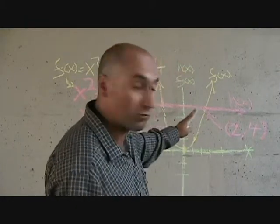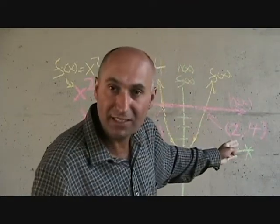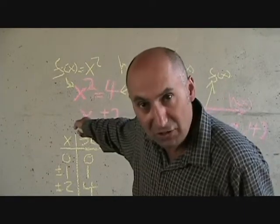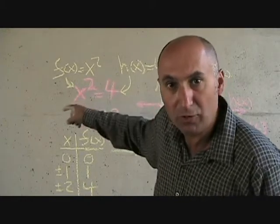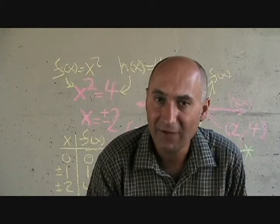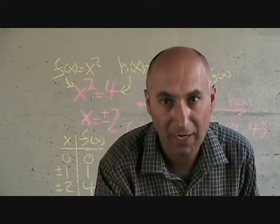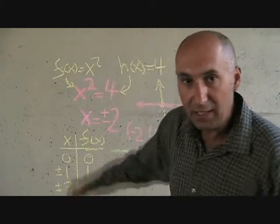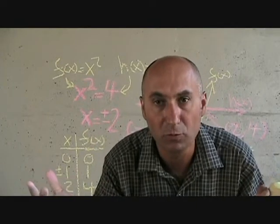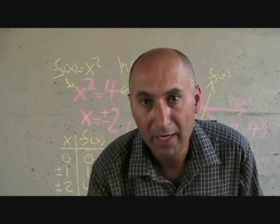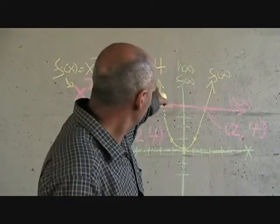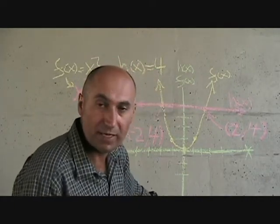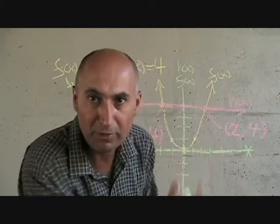Now, the line could cross the parabola at just one point if it was tangent to it, or it might not cross it at all if the line was down below. For example, if you had x squared is equal to negative 4 — if you brought the negative 4 over, it becomes x squared plus 4 equals 0. As we talked about before, you can't factor two things that are added together; you can only factor two things subtracted from each other. If you took the square root of both sides, based on the real number set, you can't take the square root of a negative number. What would happen graphically is h of x would be h of x equals negative 4, so the horizontal line would drop down below the parabola and not cross it — so there would be no real solutions.